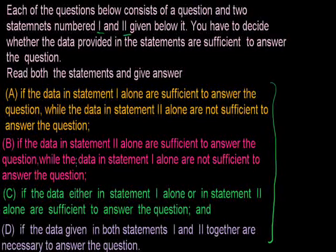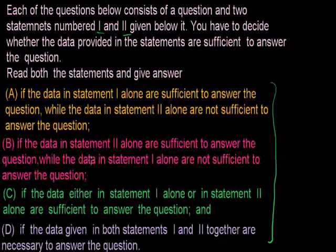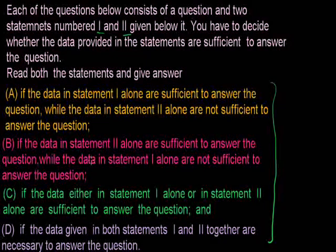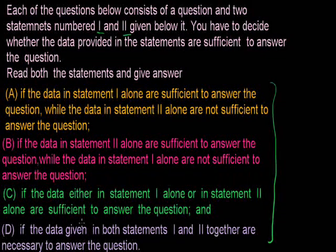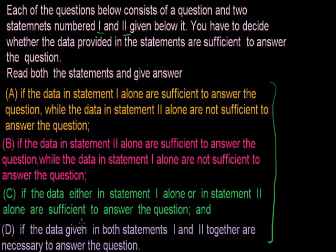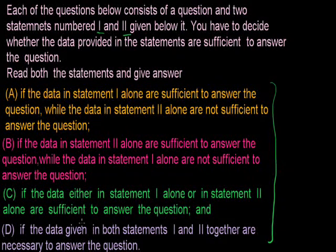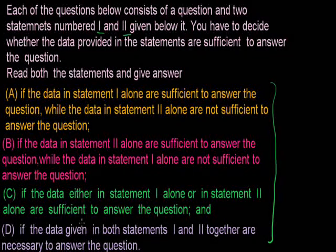For option B, it says statement two is sufficient to answer the question while statement one is not sufficient. We take option C if the problem is solved by both the options independently — if we use the first statement we get the answer, then we use the second statement and again we get the answer. Therefore, we say that both statements give the answer independently.